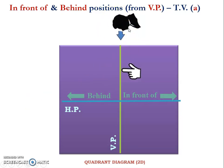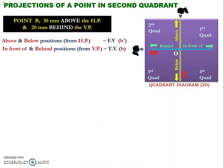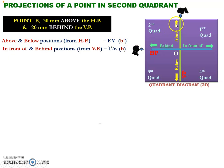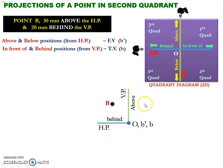The top view must be denoted using the corresponding lowercase letter. Now let us solve the same problem using the shortcut method. It is given that the point B is located 30 mm above the horizontal plane and 20 mm behind the vertical plane. From the keywords above and behind, we can understand that the point is located in the second quadrant.